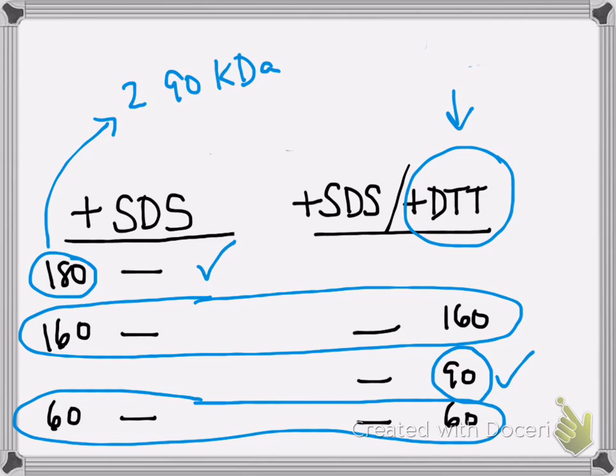And because they travel together, you just see it as a single band. You can't tell that there's more than one subunit because they're the exact same size, and so they'll run together on the gel.